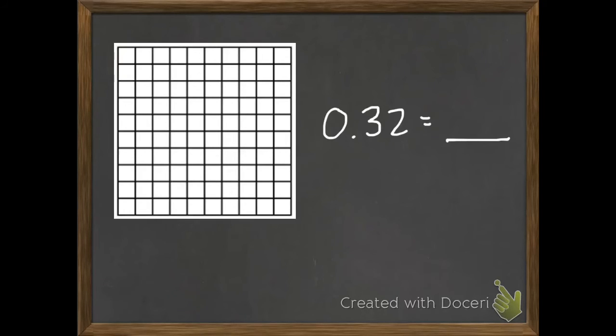Once we have our one-hundred squares, we can fill in thirty-two of them. So I can take those thirty, make them three-tenths, that's thirty. I need two more. One, two. So we filled in thirty-two of those hundredths.